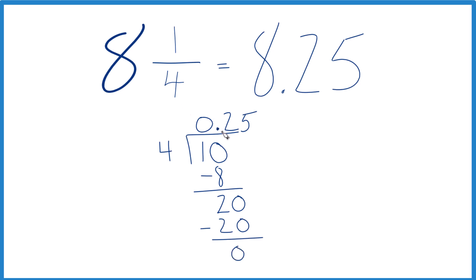So 1/4 is the same as the decimal 0.25. And 8 plus 0.25, that gives us the 8.25 we had earlier.